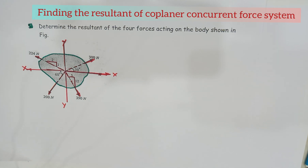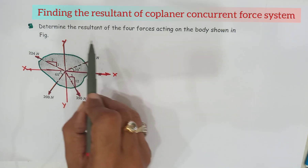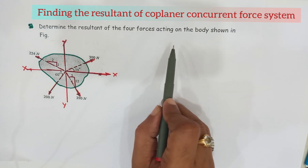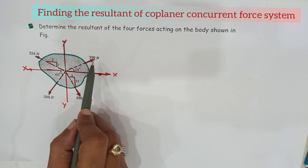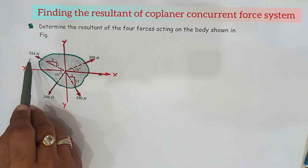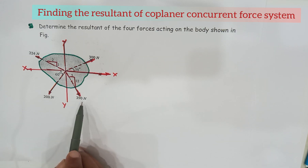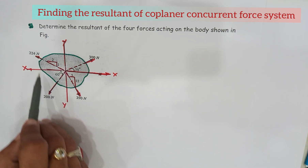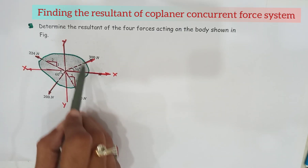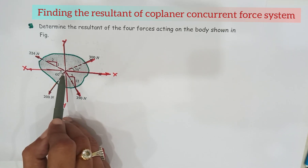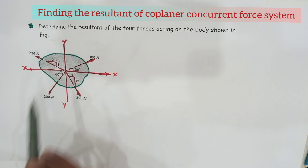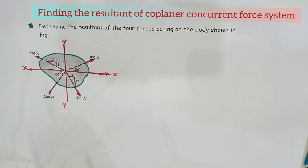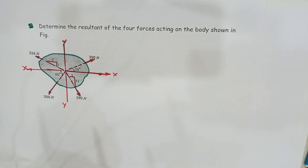The given problem is: determine the resultant of the four forces acting on the body shown in figure. The four forces are 300 Newton, 224 Newton, 200 Newton, and 390 Newton, all acting on this particular body at a single point. These forces are called concurrent forces, and as all these forces are in a single plane, they are called coplanar concurrent forces.